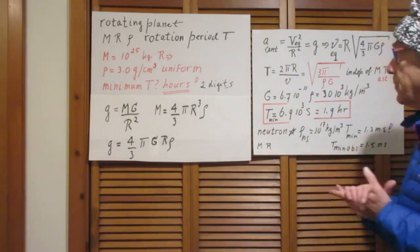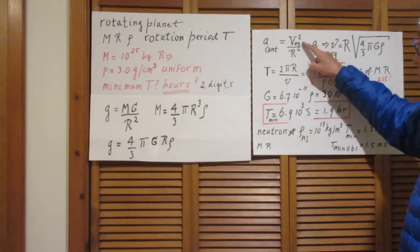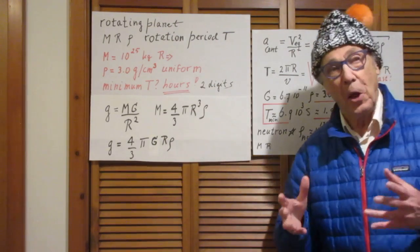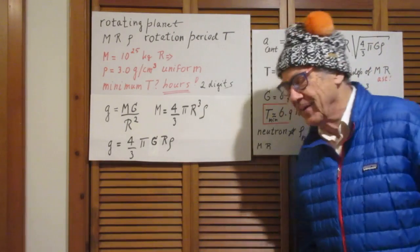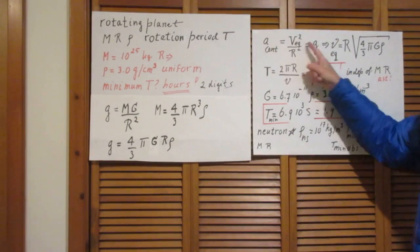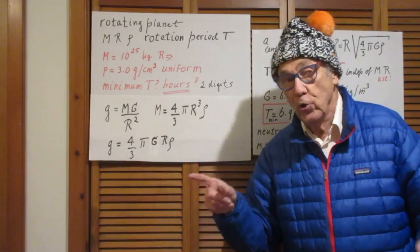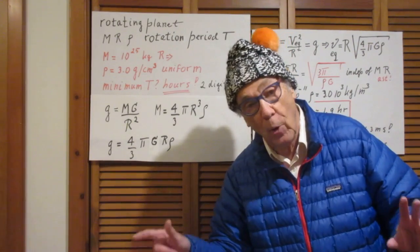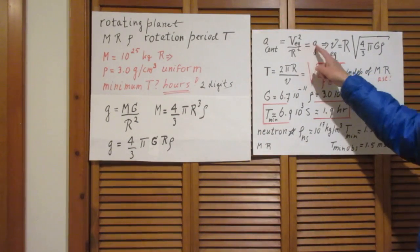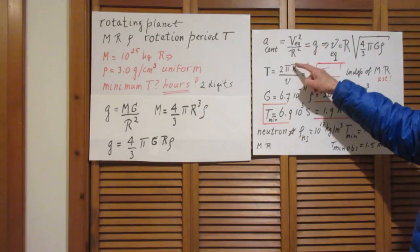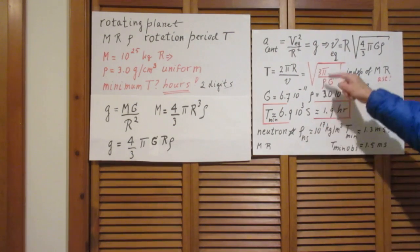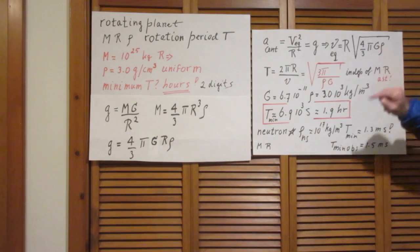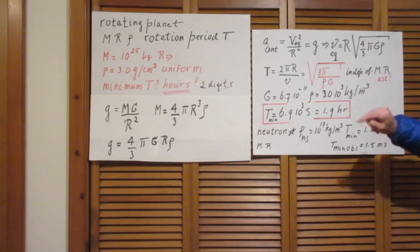Let's now look at the centripetal acceleration at the equator. That is the speed at the equator squared divided by the radius of the planet. We assume the planets are close to spherical, so the radius is the same everywhere. That centripetal acceleration has to be equal to g — to this gravitational acceleration — to calculate what the maximum rotation frequency is before the planet becomes unstable. Setting them equal, V at the equator becomes the square root of g·R. Substituting in that expression for g, I find V at the equator equals the square root of 4/3 π G R² ρ.